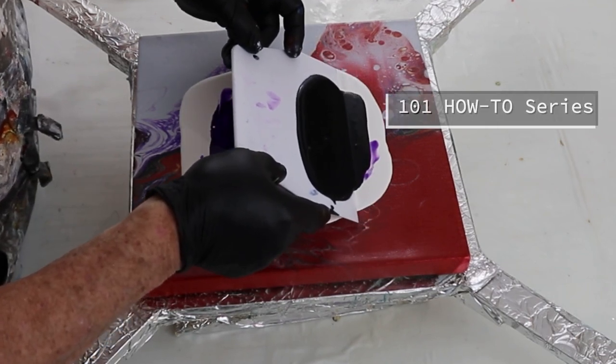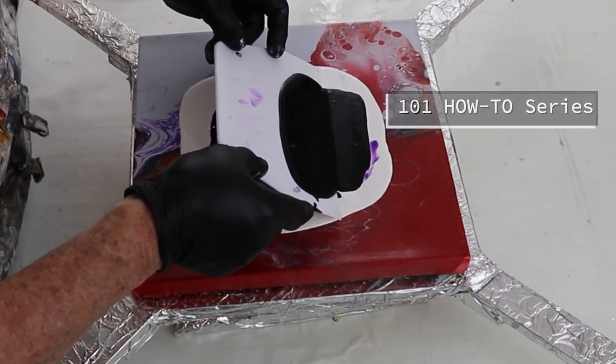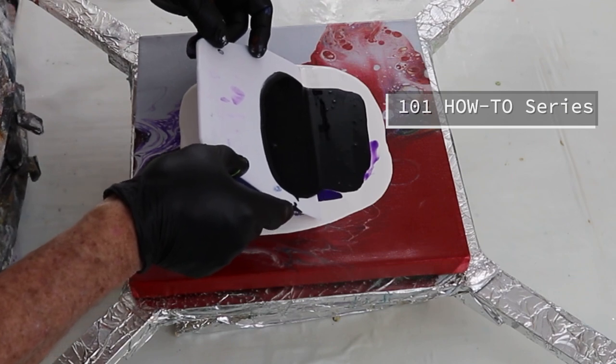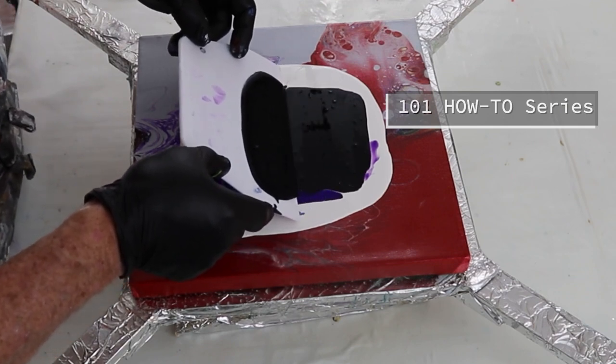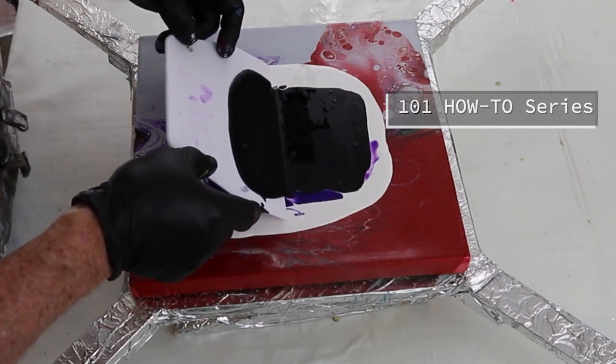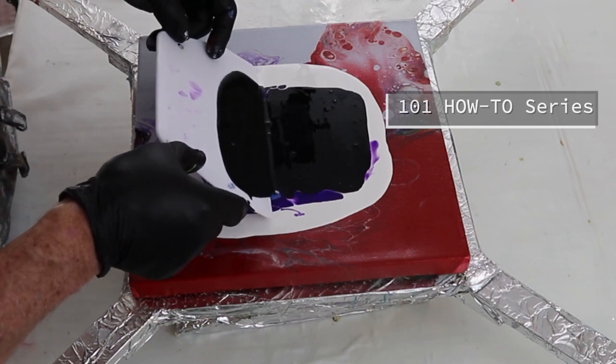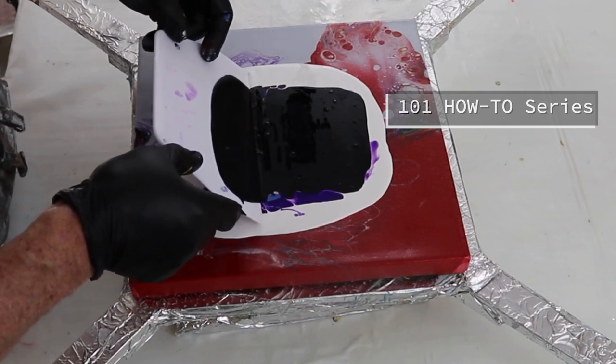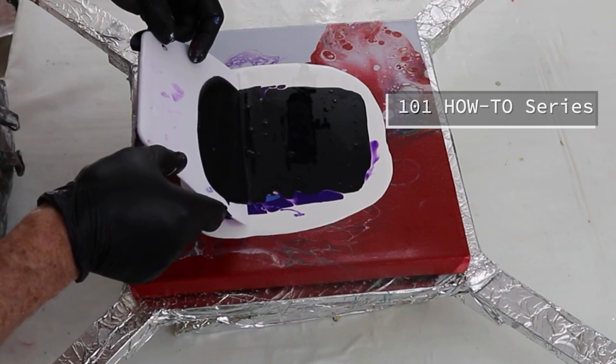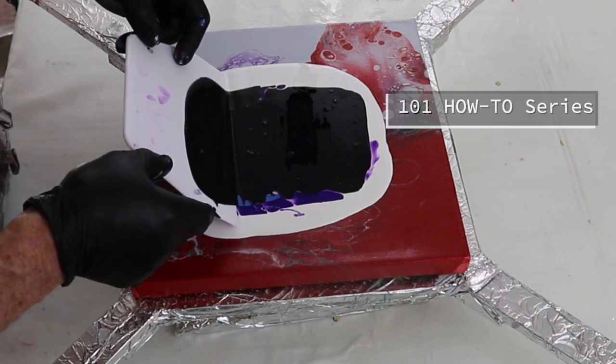If you'd like to know how I put together my paints and my pigments, how I make my pouring medium, or how I make my cell activators, you can find all that information in my 101 how-to series and it's listed above and also down in the description below. So check it out.